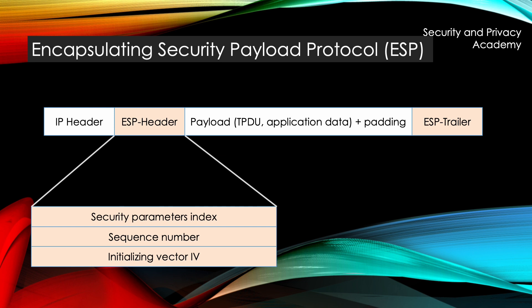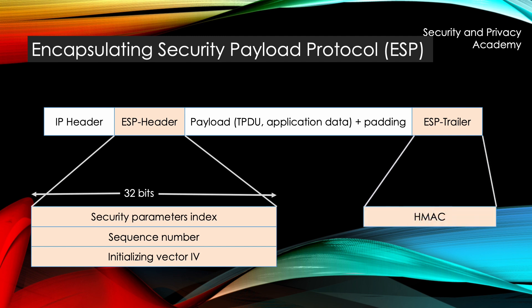There are two ESP elements introduced in the packet. First, the ESP header is placed behind the original IP header and takes care of encryption and preventing replay attacks. As was the case in the AH protocol, the security parameters are referenced via the Security Parameters Index. Second, the ESP trailer is at the bottom of the packet and contains the authentication information.